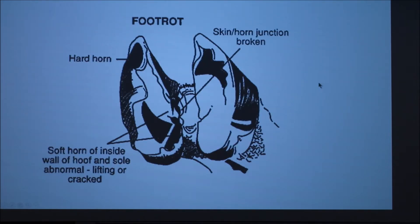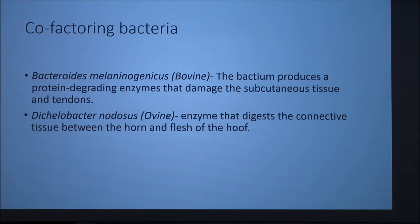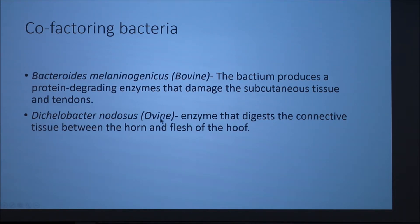Foot rot is usually seen between the two toes of the hoof. There are two cofactoring bacteria. The first is found in bovine and produces a protein enzyme that damages the subcutaneous tissue and tendons. The second, found in sheep and goats — that's what ovine means — is the same concept: an enzyme that kills the connective tissue between the horn and the flesh of the hoof.